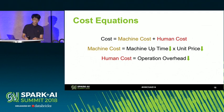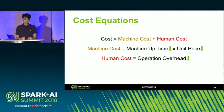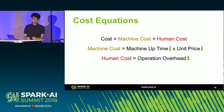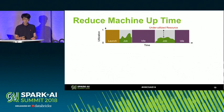Here are the cost equations we considered when designing SparkGen. We consider two major types of cost: machine cost and human cost. Machine cost is mostly determined by the uptime of your machines multiplied by the unit price charged by the cloud provider. Human cost mainly refers to operation overhead. Our goal is to bring down all three factors: machine uptime, unit price, and operation overhead.